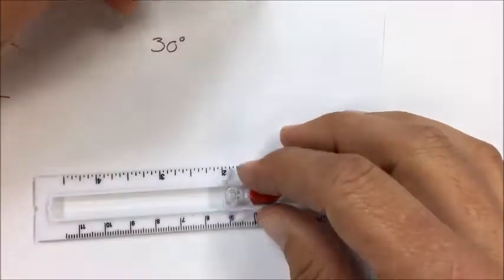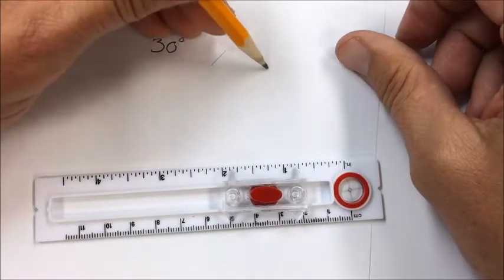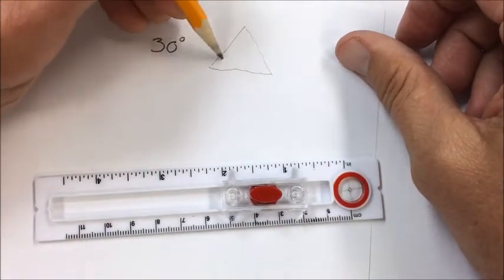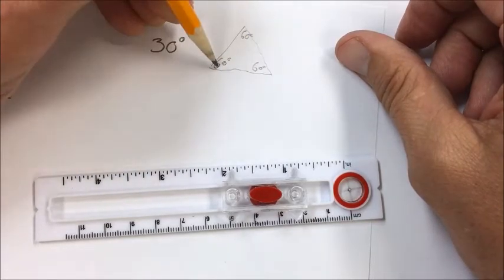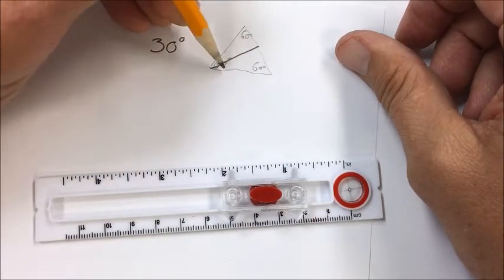So now we're going to do a 30-degree angle. For the 30-degree angle, what I'm going to do is make an equilateral triangle first. Angles there are 60 degrees, and notice if I just grab one of those angles and bisect it, that'll be 30.